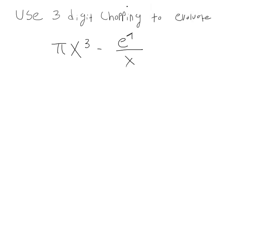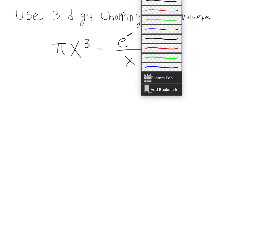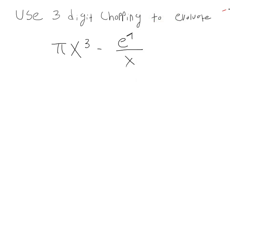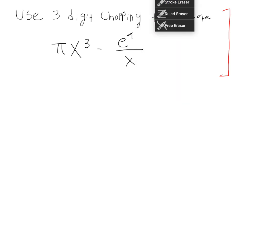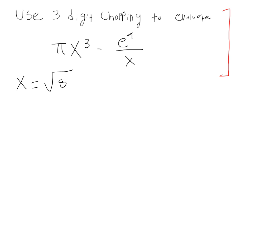We're going to take an example question to learn how to do this. We use three-digit chopping to evaluate the equation: pi times x cubed minus e to the one over x. We're told to evaluate using three digits, and we'll say that x is equal to the square root of 5.